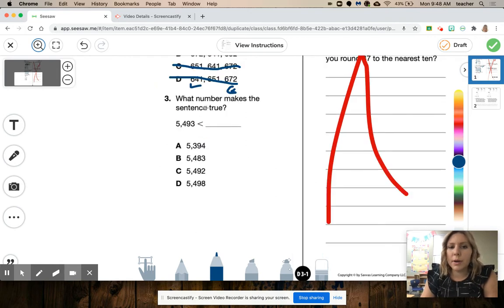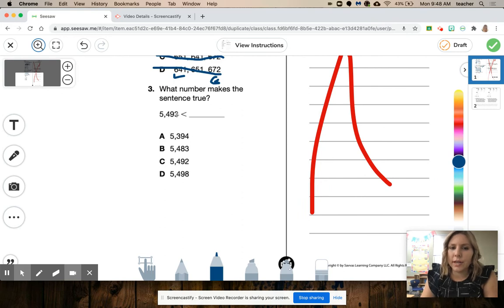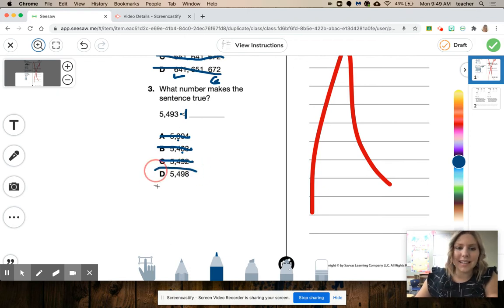What number makes the number sentence true? So 5,493 is less than the smallest point here. It's pointing to the smallest number. Do you see how this side is bigger? It's pointing to the bigger number. The alligator wants to eat the bigger number. So if I have 5,493, I know that's smaller than this number. So I need to find numbers bigger. 5,394. 300's less. Not going to work. 5,483. 8 is less here and the rest are the same. It's not going to work. 5,492. Oh, it's so close, but it's one less. That won't work either. 5,498. Yes, that one is bigger. It's the only one that will work.